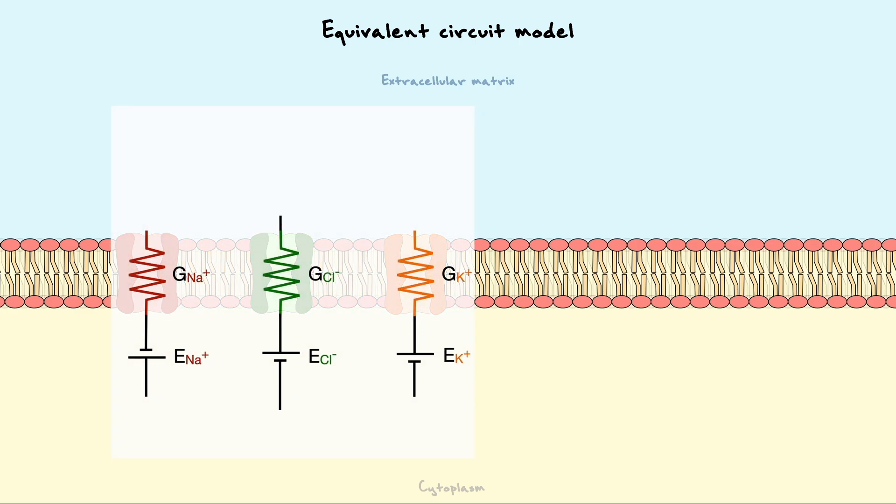As we did with potassium, each conductor is connected to its battery or in other words, their equilibrium potential. In the potassium example we just did, we only considered the conductance of one channel. To take into account the entire population of channels, we can multiply the number of channels by the individual conductance to get the total conductance here noted as capital G.